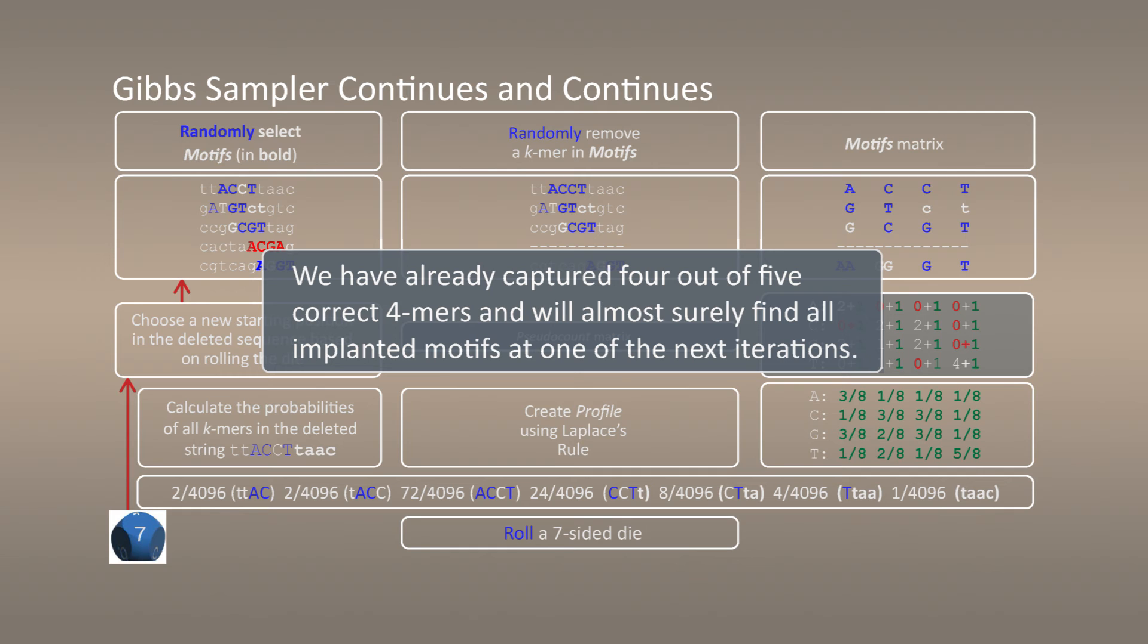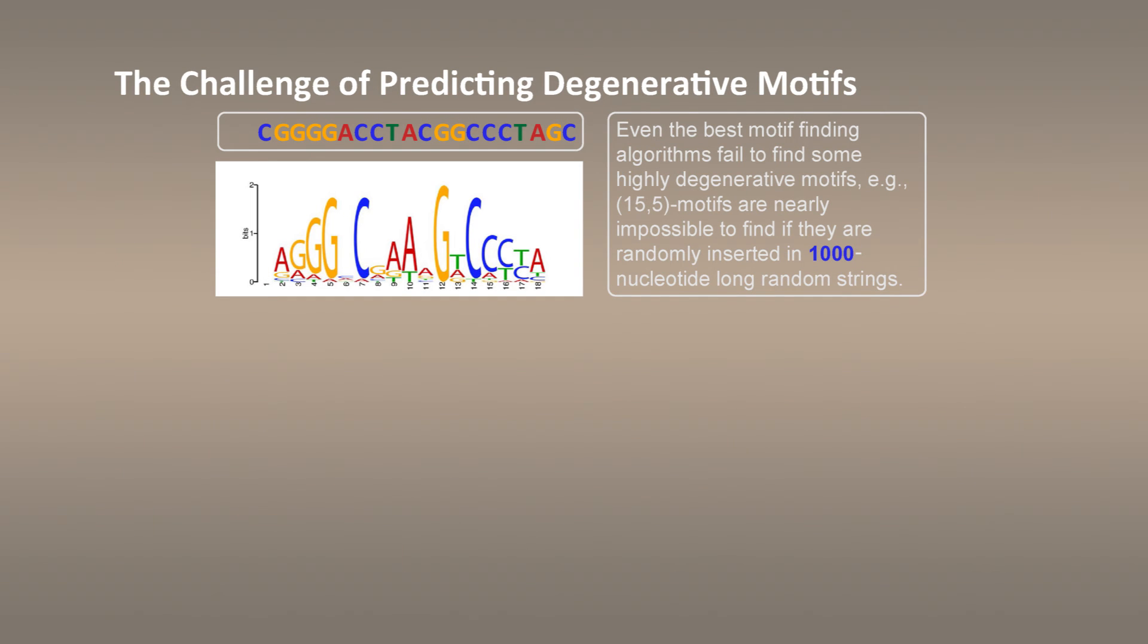We are almost done with covering randomized algorithms, but the challenge of predicting degenerative signals remains. Remember, our randomized motif search did not find the perfect binding sites for this motif. What can we do? Well, there is one possibility. Maybe we can develop even better algorithms for finding motifs.